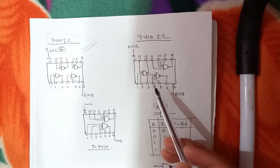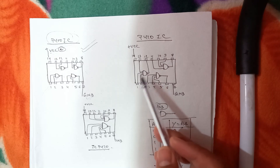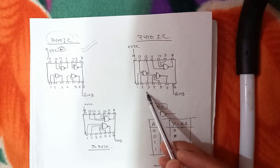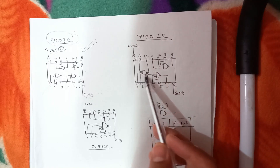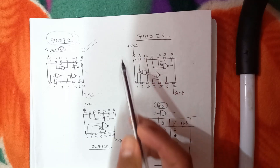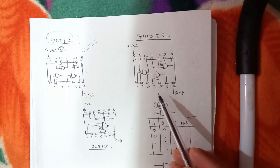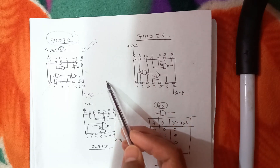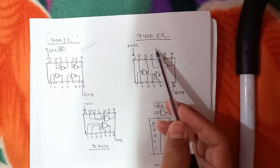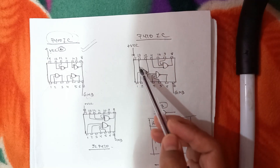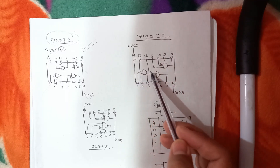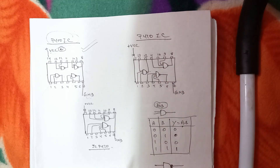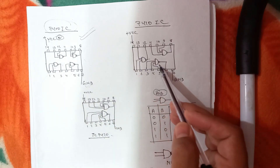The same thing can be done for the 7410 IC. Here we need to know where the output is taken from. We cannot take output from pin 3 the same way — we need to give inputs from pins 1, 2, and 13, and we can get output from pin 12. After giving VCC at pin 14 and ground at pin 7, we give all three inputs at 0, and the output will be high. If all three inputs are high, output will be low. If any one input is low, output will be high.